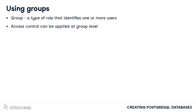Rather than just creating an account for your spouse, other members of your family might want to access the database as well. In this case, a family group can be created. A set of privileges can then be granted to the family group, such as insert, update, delete, and select on a database table or schema.